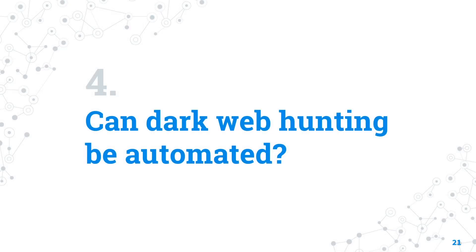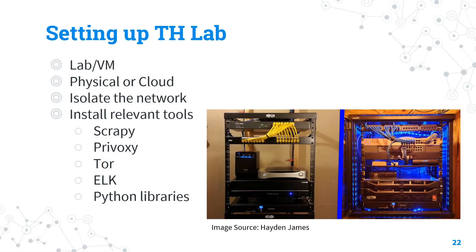Now comes the pipeline or architecture for automating threat hunting. First, set up a separate system — you don't want personal data on the system where you're doing threat hunting. Set up a lab or VM, whether physical or cloud, isolate the network, and install relevant tools like Scrapy, PRIVOXY, Tor, and if using Elasticsearch and Kibana, the ELK stack, plus different Python libraries necessary for your task.